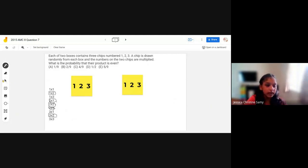So we can now see that out of 9 combinations, 5 of them will be even. So we have our answer. The probability that the product is even is 5 by 9.